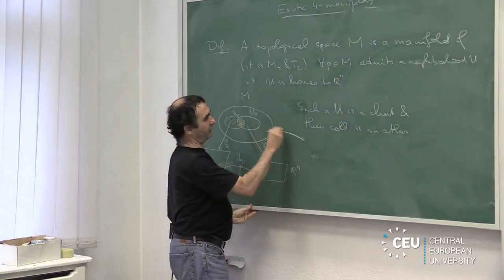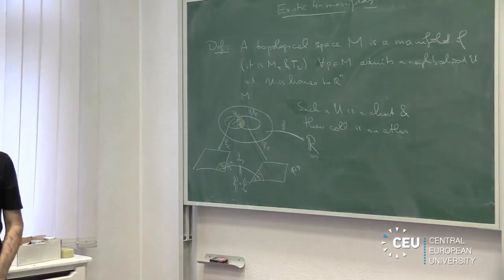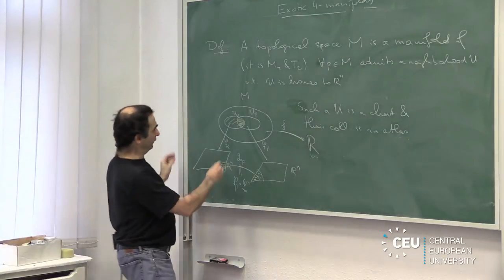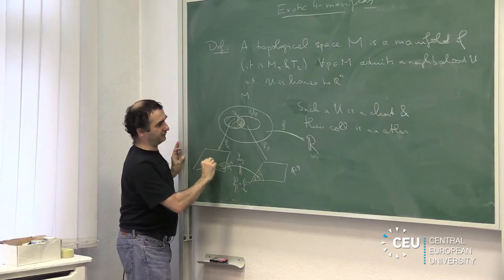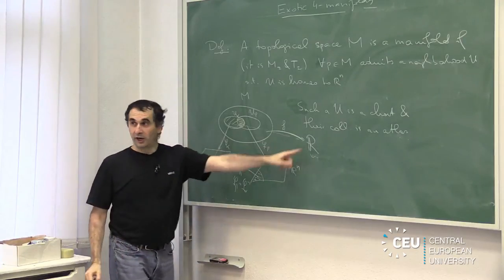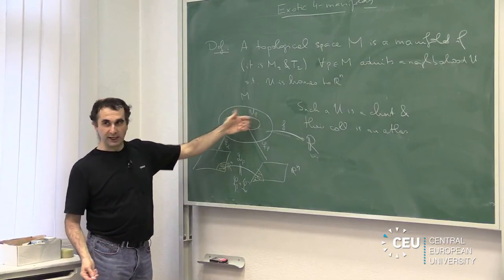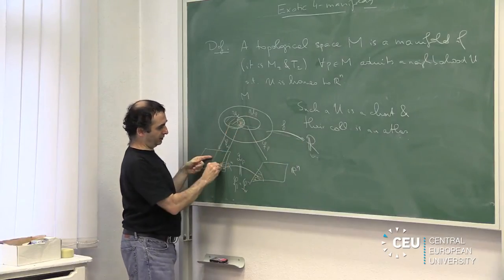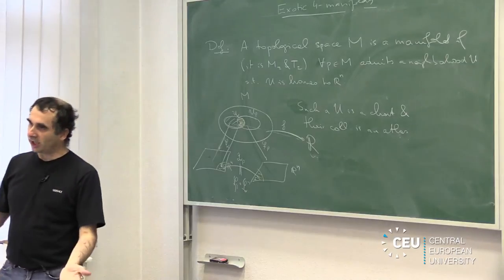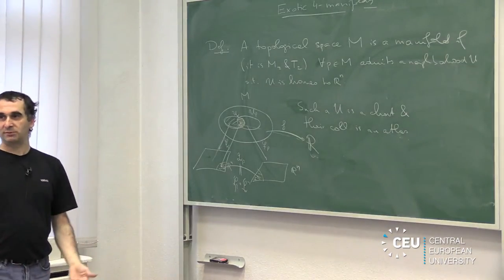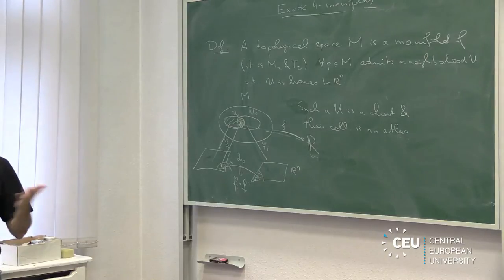Suppose we have a function f defined on this topological space. Continuity makes sense — that's what topology is designed for — but differentiability in general does not. However, if we restrict to one chart U_alpha and compose with phi_alpha inverse, we get a map from R^n to R and can ask whether it's differentiable. The problem is this notion might depend on which chart we take. But if the transition function is differentiable, then by the chain rule you get a well-defined notion of differentiability on a topological space — very convenient for applying calculus to topological problems.